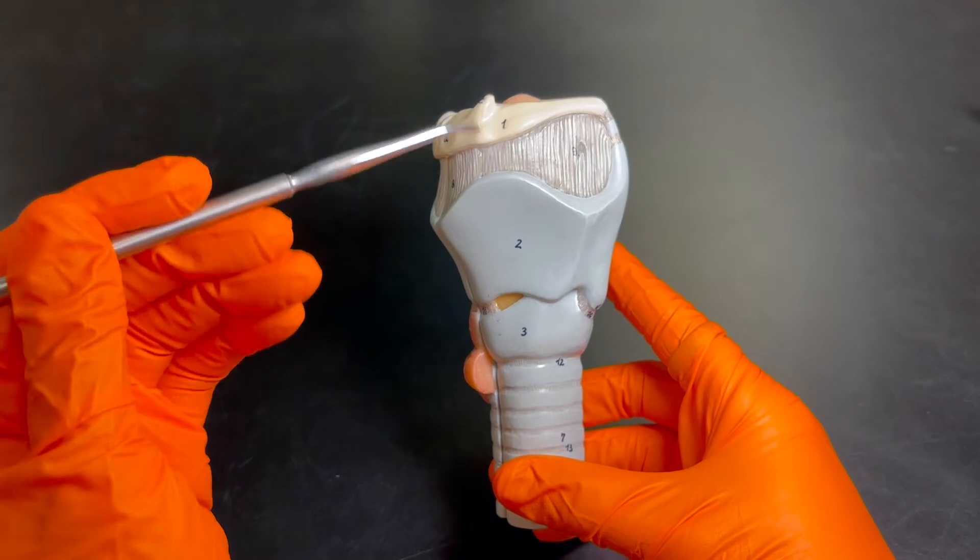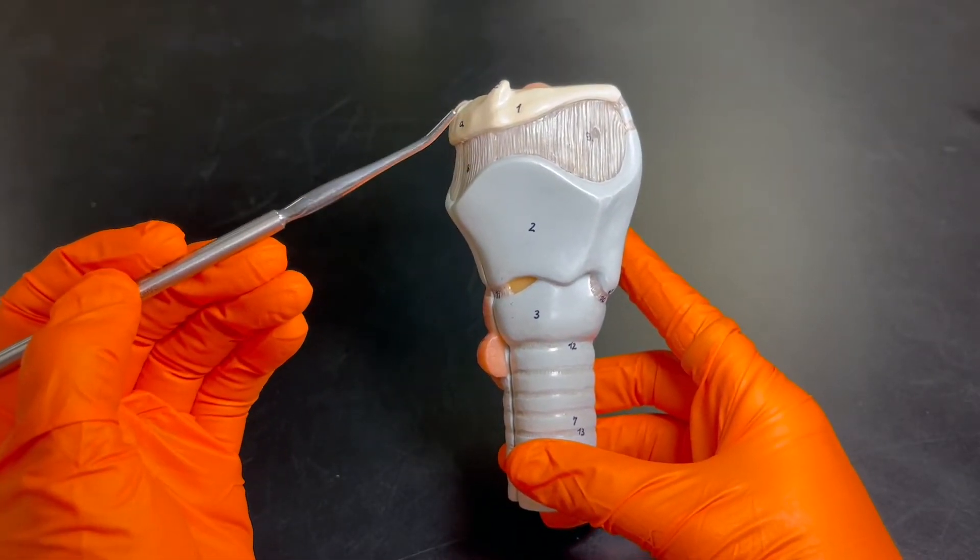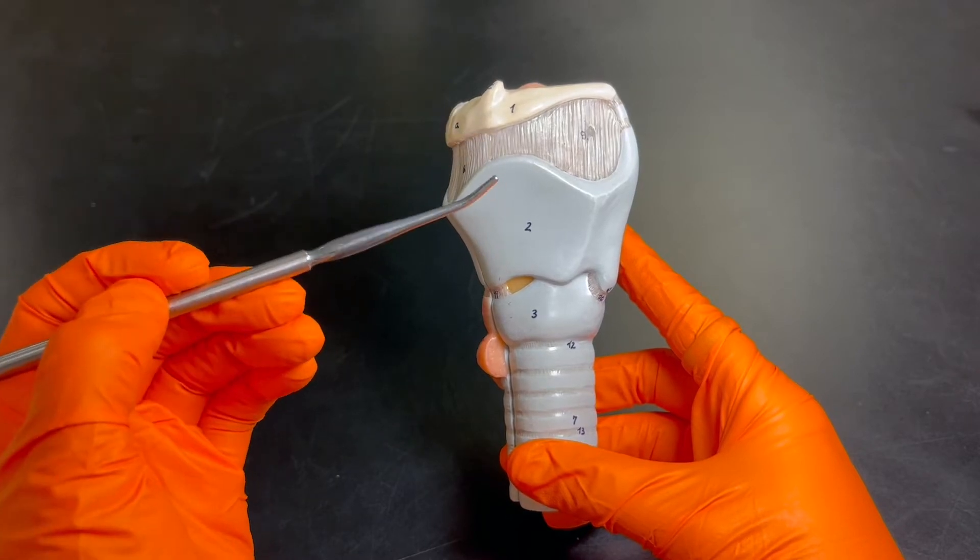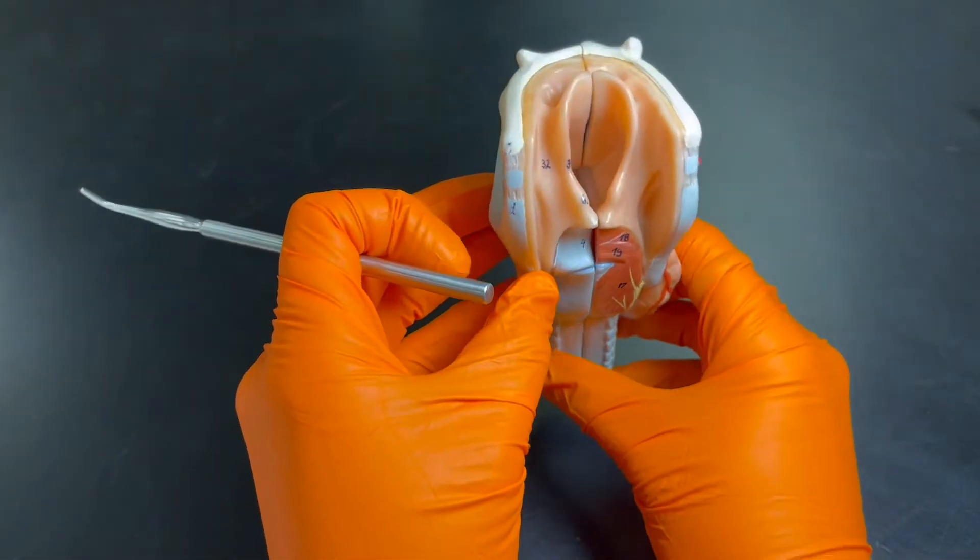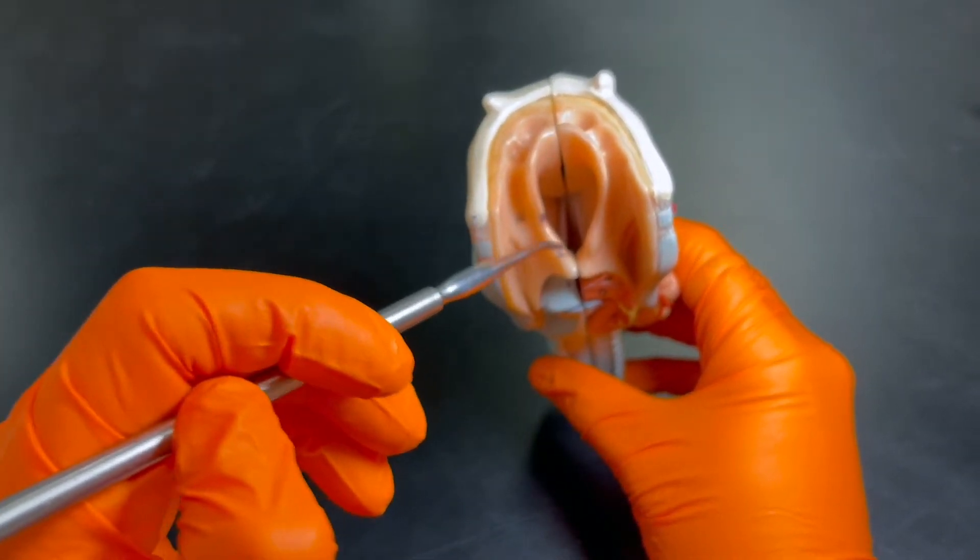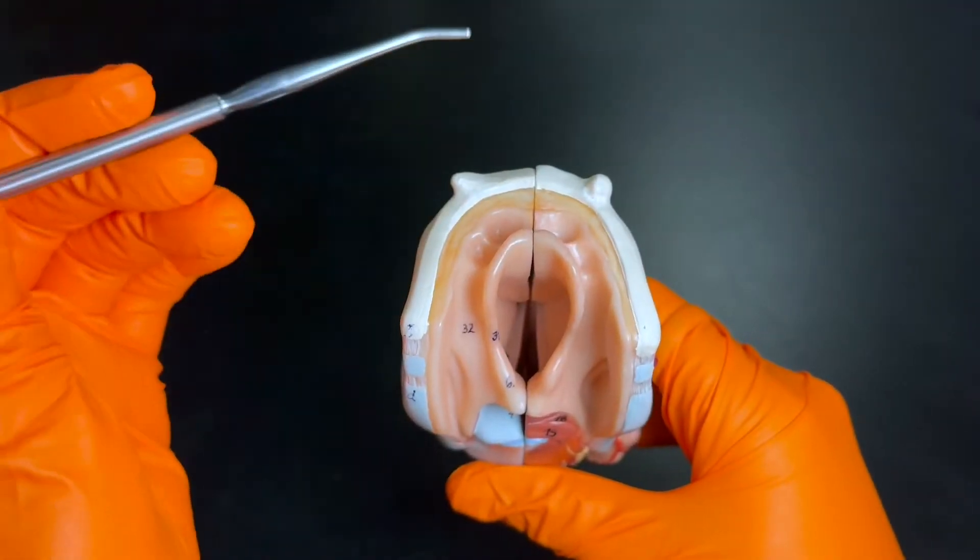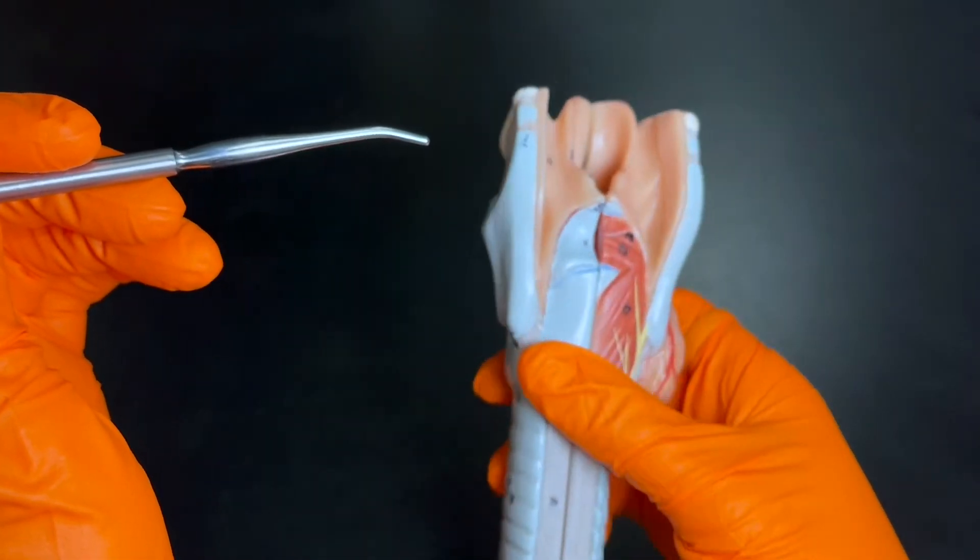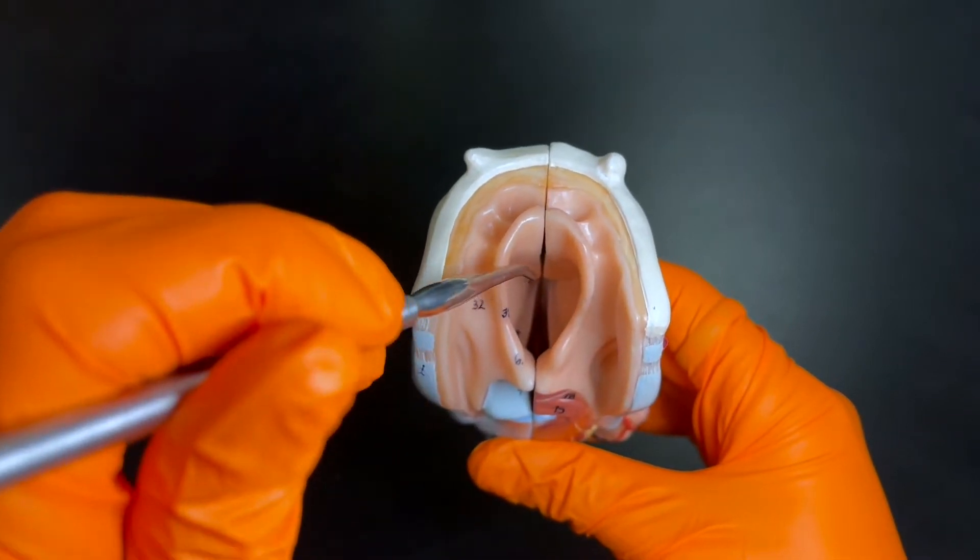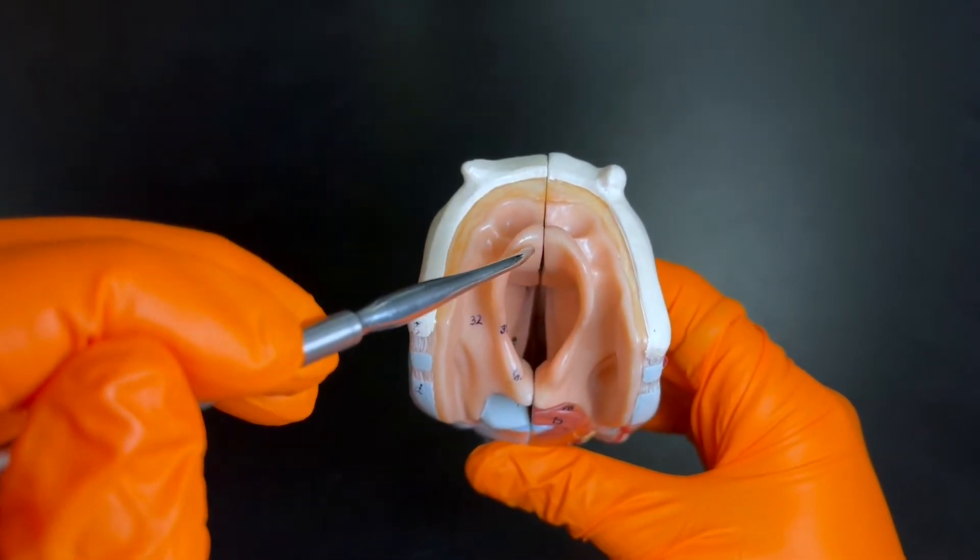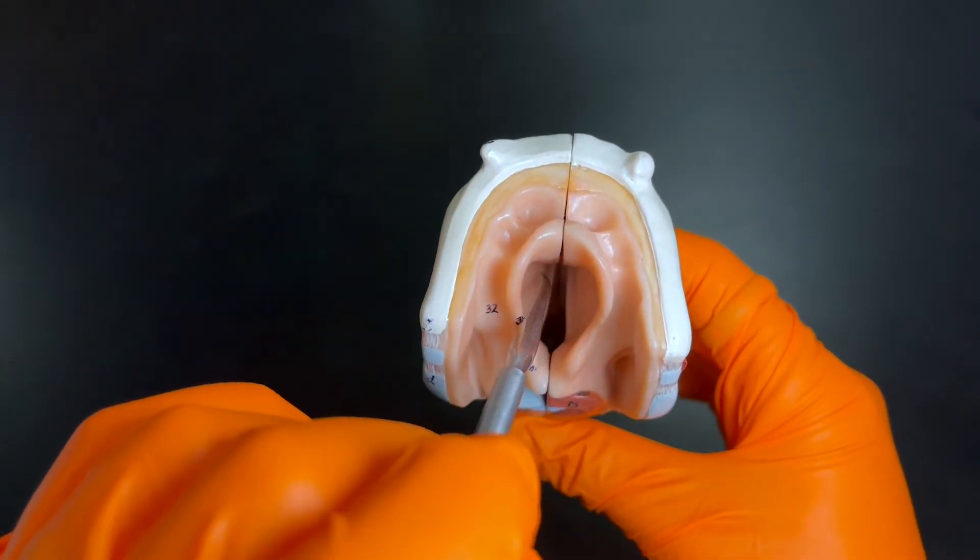So this portion right here is called the larynx, which is commonly referred to as the voice box. The reason why it's called the voice box is because it will contain the vocal folds. Let's take a closer look at those. Okay, so here what I've done is I've taken it and we are looking down the windpipe or this tube. Here, this is the epiglottis.